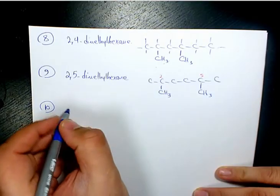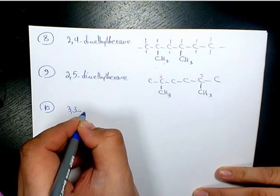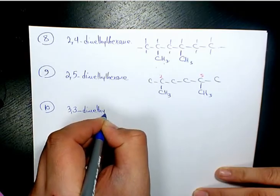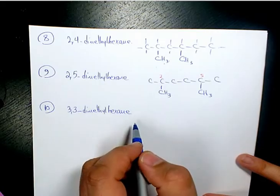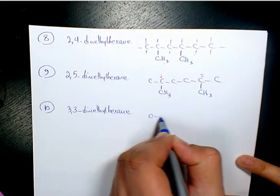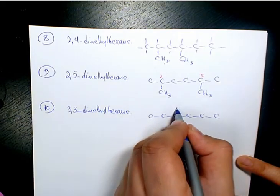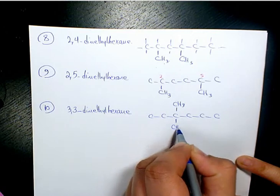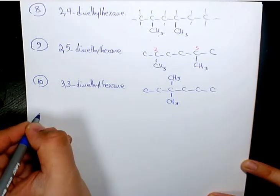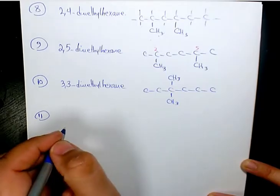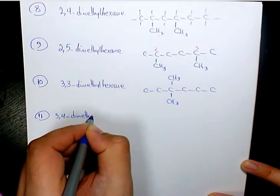Number ten is going to be 3,3-dimethylhexane. We have two methyl groups both on the third carbon — one here and one here. Number eleven is going to be 3,4-dimethylhexane with six carbons on the main chain and methyl groups on carbons three and four.